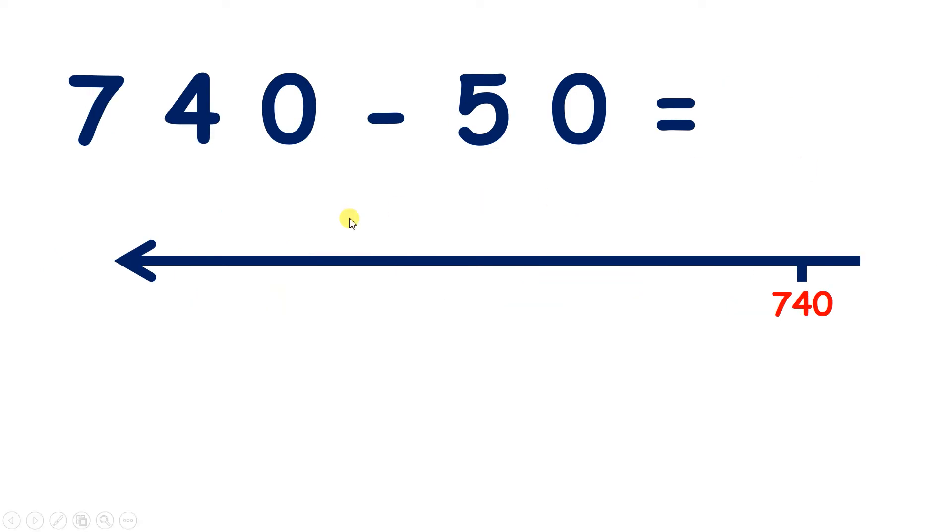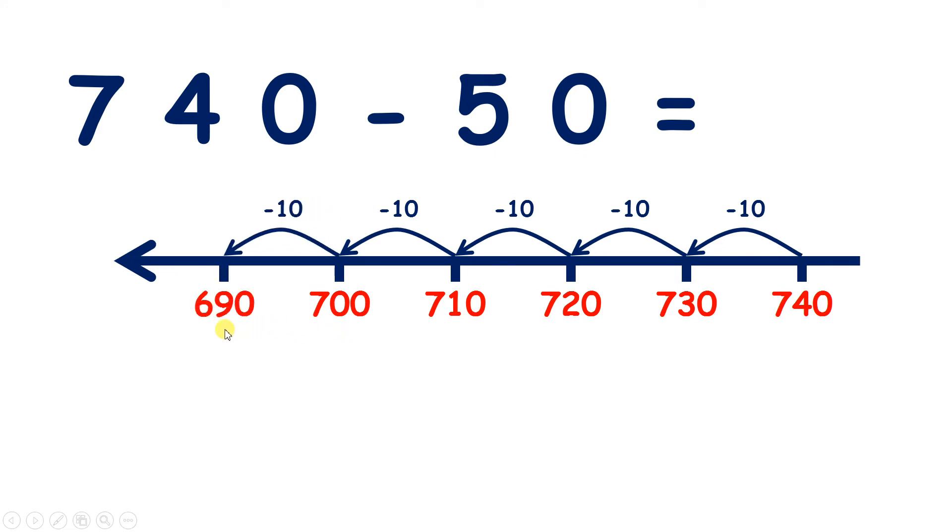Now what is 740 minus 50? So let's count back five tens from 740. 730, 720, 710, 700, 690. So we've subtracted five tens to give us 690.